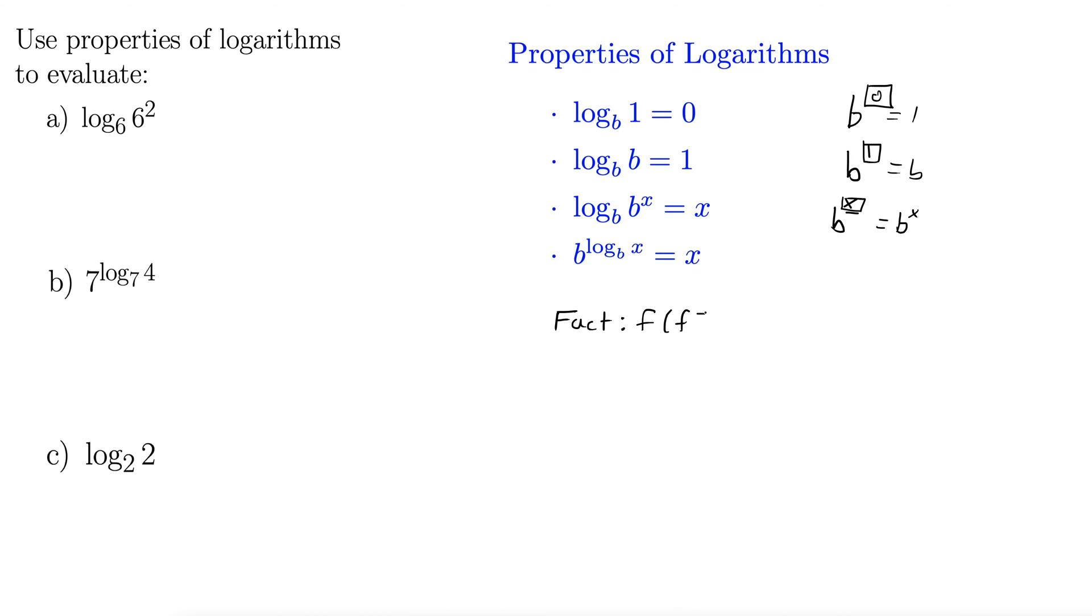f of f inverse of x always gives us x back. In fact, it worked in two different ways. We could also have done f inverse of f of x always gives us x back, right? The function and the inverse undo each other. So what we've done here, remember we can define f of x to be b to the x. And that's how we got our logarithm, it was simply the inverse function. So then f inverse of x would be log base b of x.